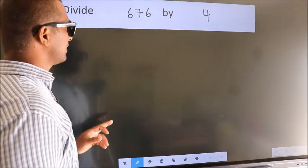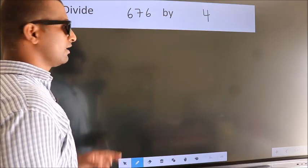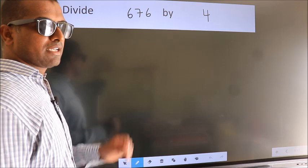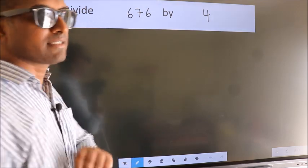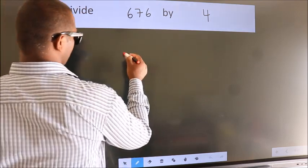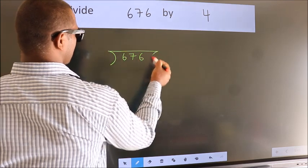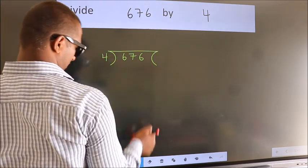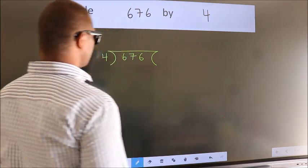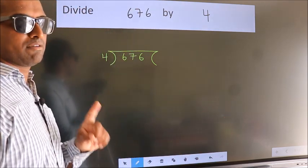Divide 676 by 4. To do this division, we should frame it in this way. 676 here, 4 here. This is your step 1.